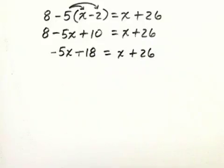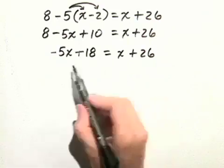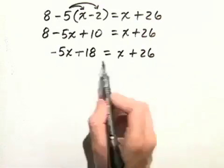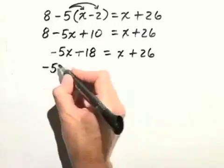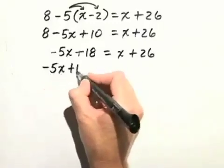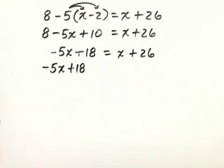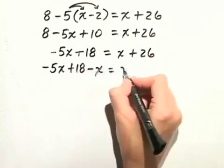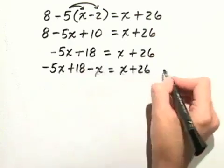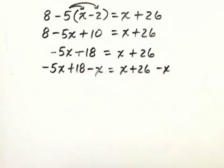Now, let's go ahead and move the terms that have variables to the left hand side. So we can do that by subtracting x from both sides of the equation. Negative 5x plus 18, let's subtract x from the left hand side, equals x plus 26, and we'll subtract x from the right hand side as well.